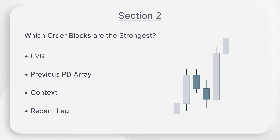Next, order blocks need to come off of a previous PD array. So if we're looking at a bullish order block — the one we see on the right — it is coming off of that fair value gap. After that, we create a fair value gap, and that is a valid order block. The PD arrays we use are: mitigation block, breaker block, order block, fair value gap, swing high, swing low, previous candle low, and previous candle high.